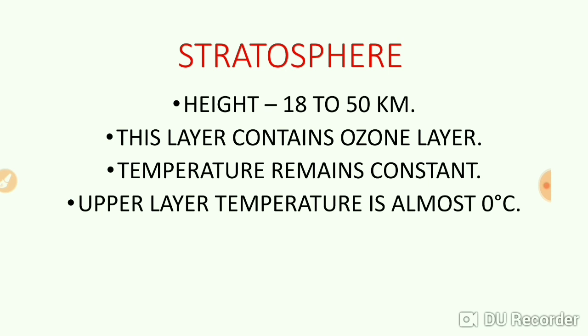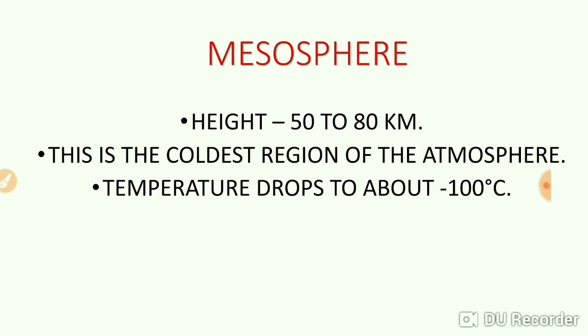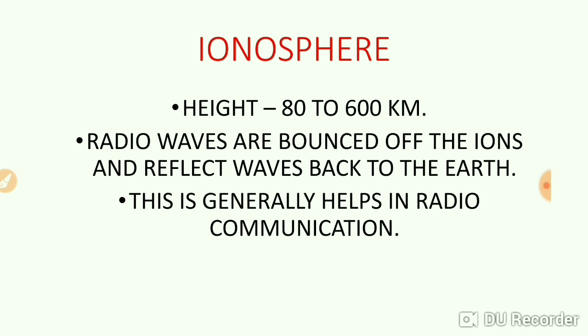Temperature remains constant in the stratosphere, and the upper layer temperature is almost zero degrees Celsius, meaning the climate of this sphere is almost cold. Next is the mesosphere. The height of the mesosphere ranges between 50 kilometers to 80 kilometers. This is the coldest region of the atmosphere.